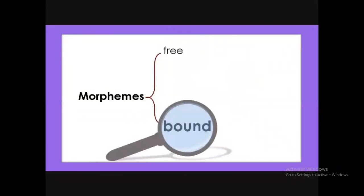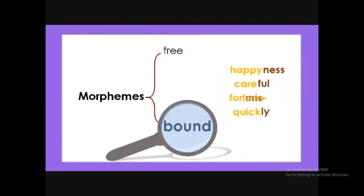Bound morphemes need to be with a free morpheme to make sense. Among these we have '-ness,' '-ful,' '-mis,' and '-ly.' Isolated, they don't make sense. But look now: 'happiness,' 'careful,' 'misfortune,' and 'quickly.' Bound morphemes are like attachments that give words additional meaning.